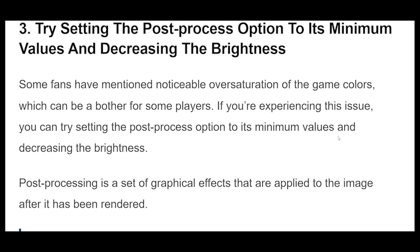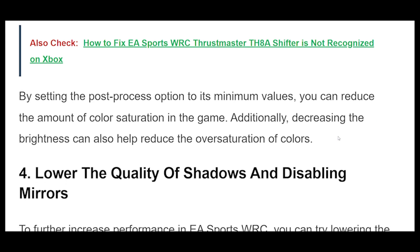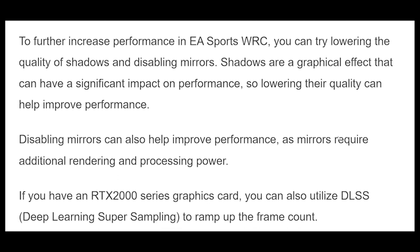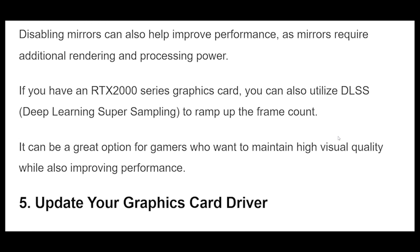Tip 4: To further increase performance in EA Sports WRC, you can try lowering the quality of shadows and disabling mirrors. Shadows are a graphical effect that can have a significant impact on performance, so lowering their quality can help. Disabling mirrors can also help improve performance, as mirrors require additional rendering and processing power. If you have an RTX 2000 series graphics card, you can also utilize DLSS (Deep Learning Super Sampling) to ramp up the frame count, making it a great option for maintaining high visual quality while improving performance.